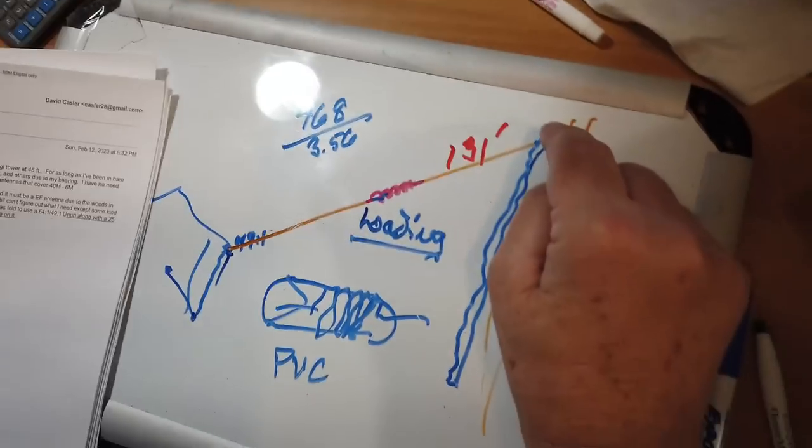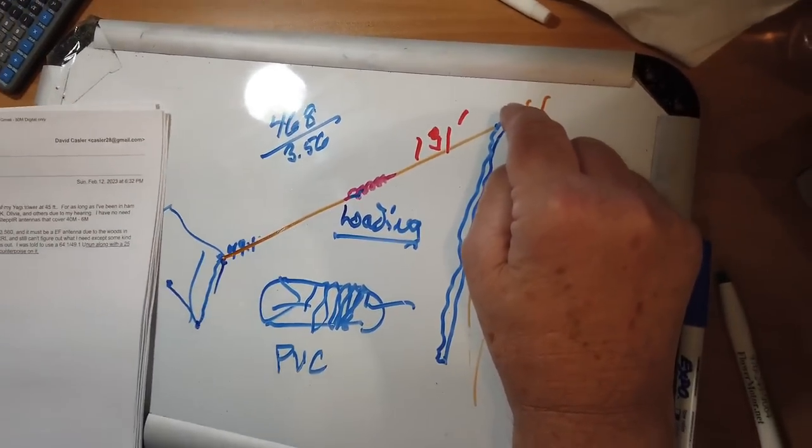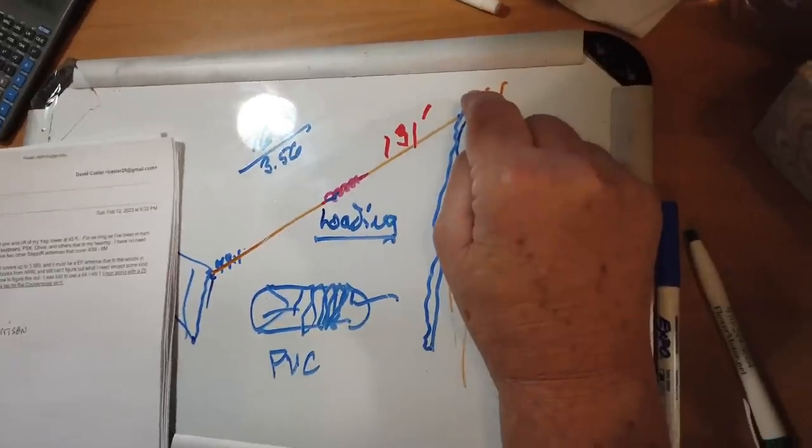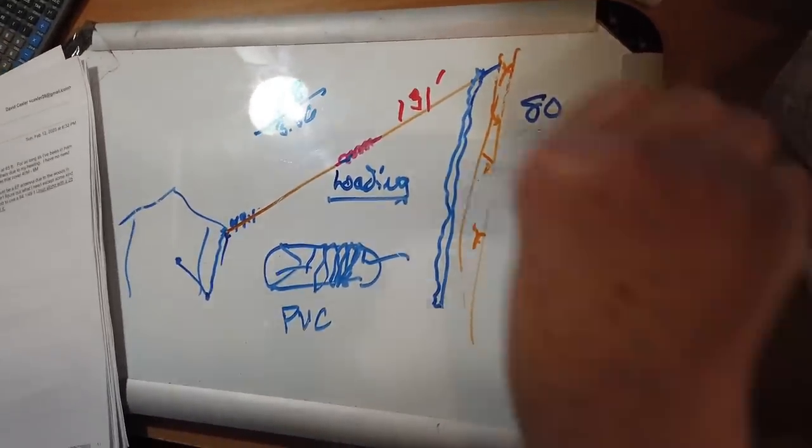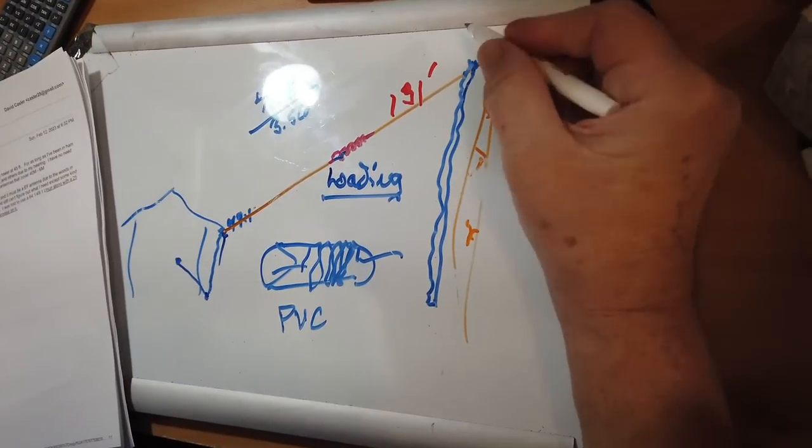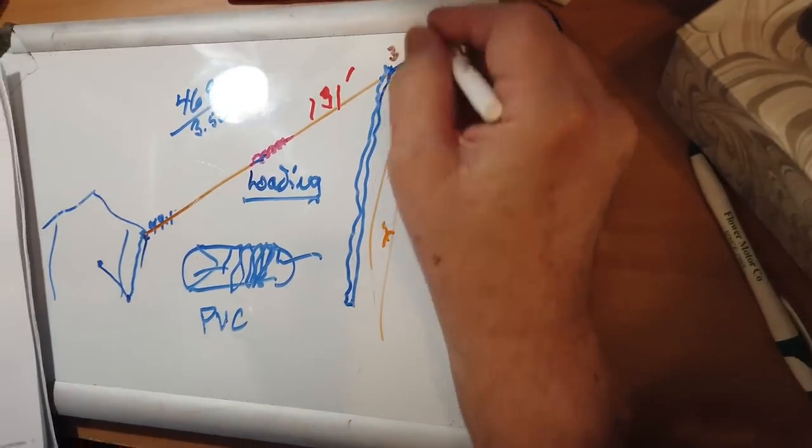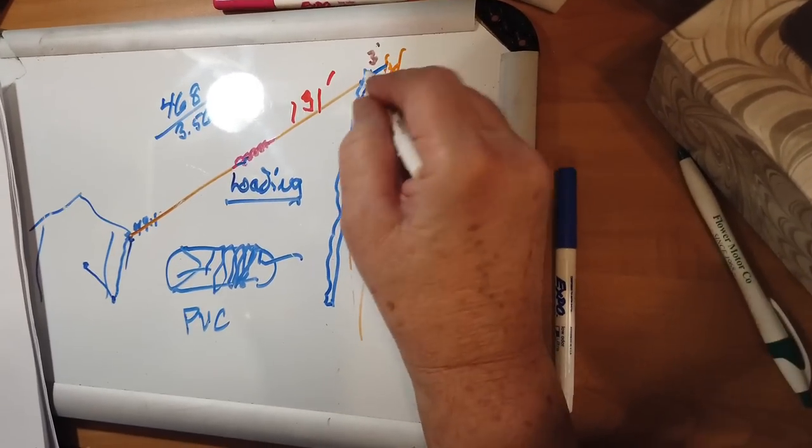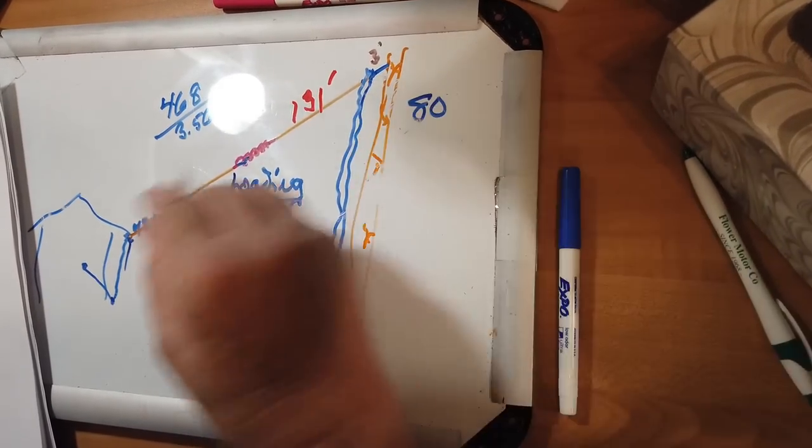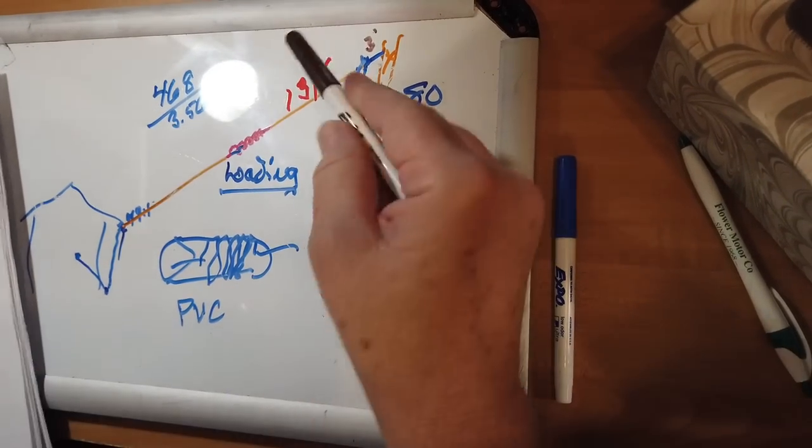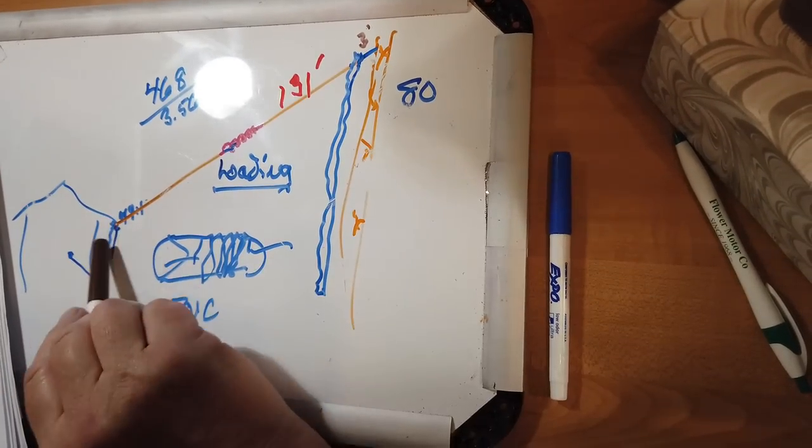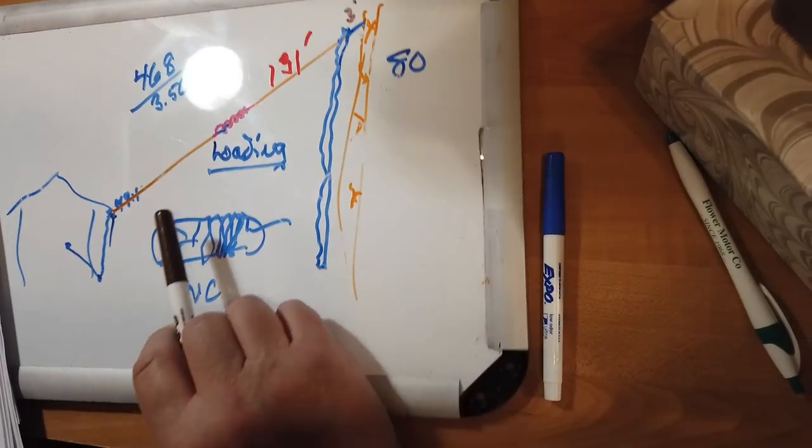Get somebody to climb the tower, or if you're going to climb the tower, get a safety observer, just a piece of rope. I would suggest that this piece of rope up here be at least three feet long. Otherwise, the antenna and the tower start to become part of each other, which may or may not be a good thing.